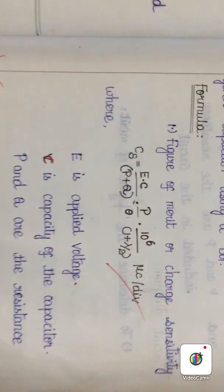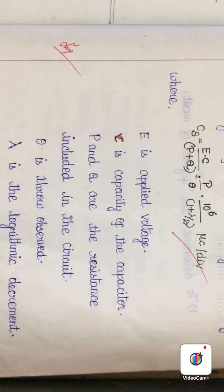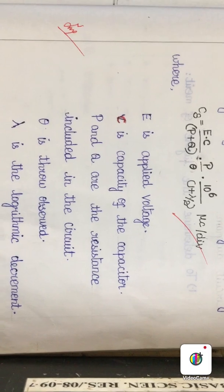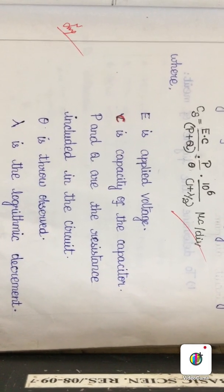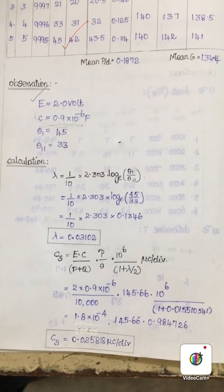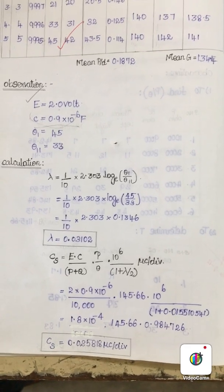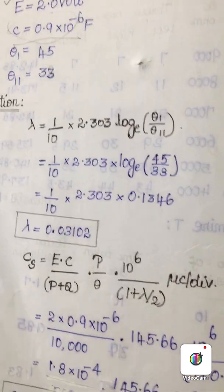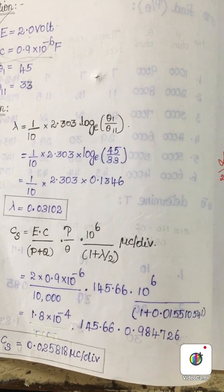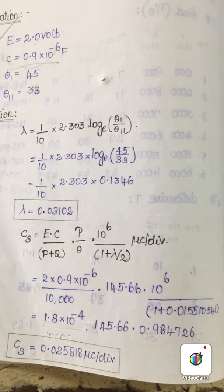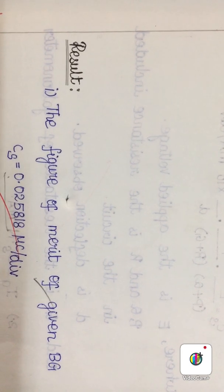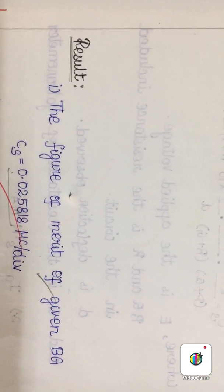By substituting the EMF of the battery E, capacitance value C, P plus Q which adds up to 10,000, and the value of lambda, we can calculate the charge sensitivity of the given BG. You can see how the observation and calculations are done. This is the observation and lambda calculation. The Cs can be calculated by substituting the values of E, C, P plus Q, P by theta, and lambda. The values can be recorded in terms of micro coulomb per division. The results for the charge sensitivity can be given as shown.